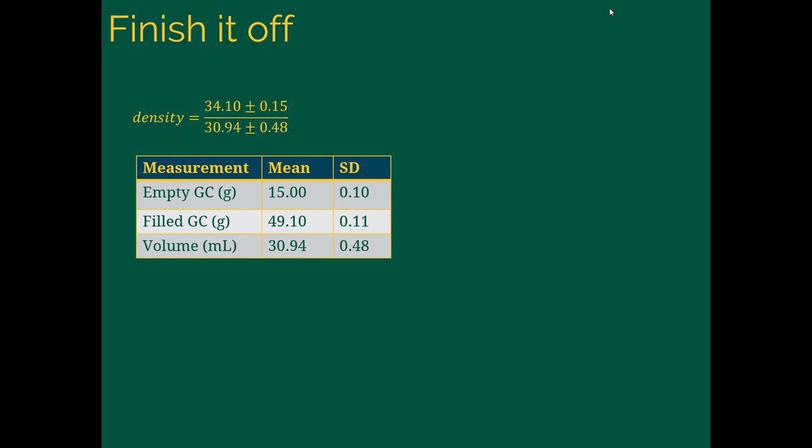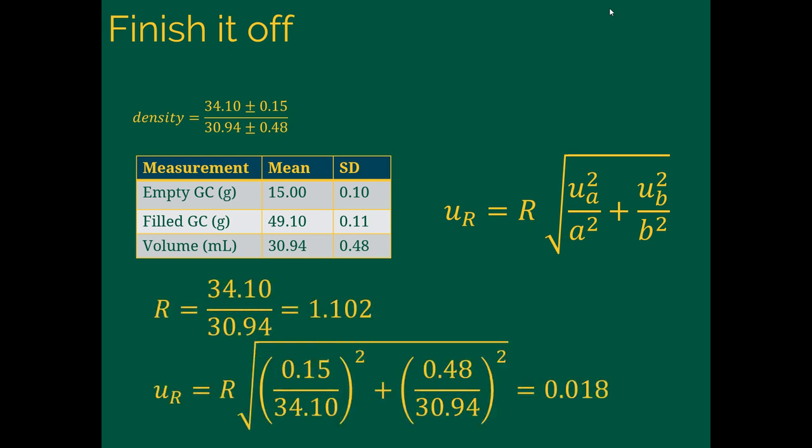Okay, let's finish it off. If we've got a density now, which is a mass over a volume, that's a division, and multiplication or division require that we use this equation here. Notice that we do need the results, so that means we need the density, the value for R, and then we need our uncertainties for the two values that we're dividing, and the actual values themselves, the A's and the B's. So that's why we calculated the difference in the mass from the previous one. The result is going to be just the two numbers like we would usually calculate a density, so the mass in the numerator, the volume in the denominator, and we get that 1.102. Great.